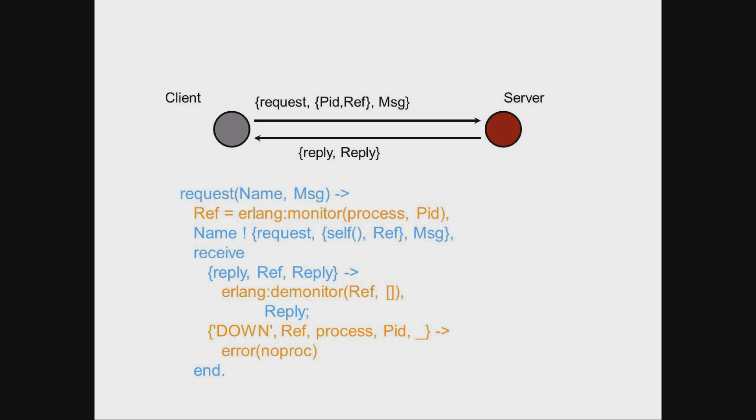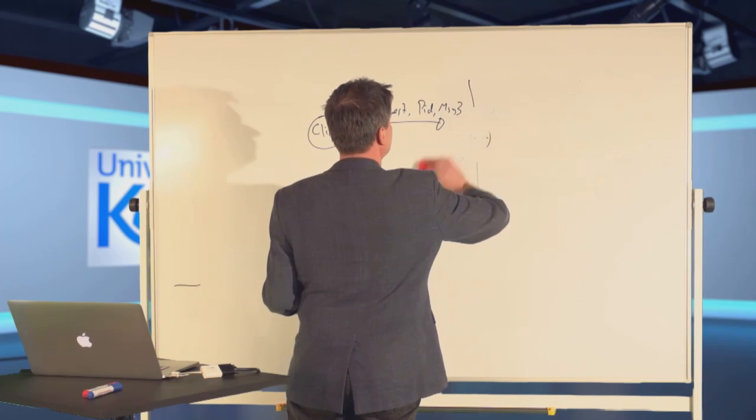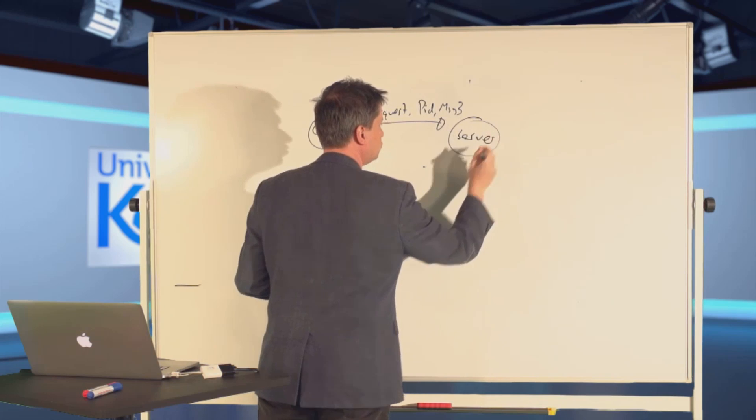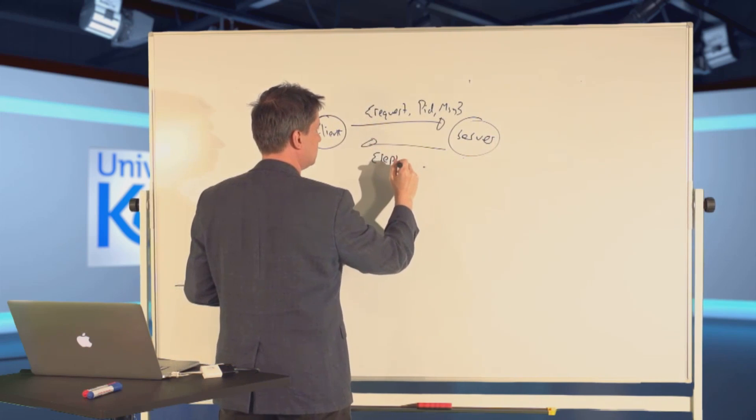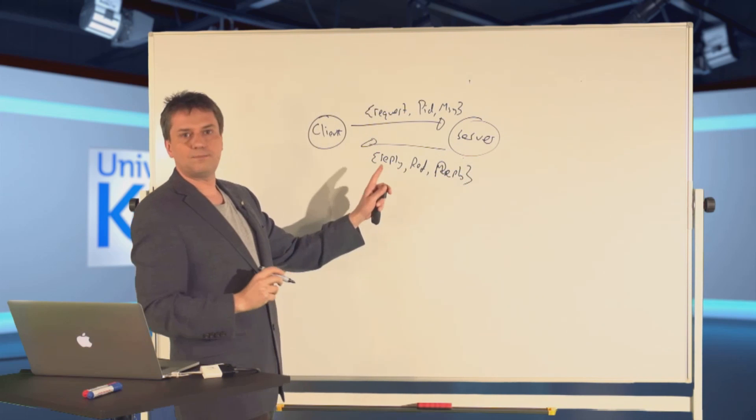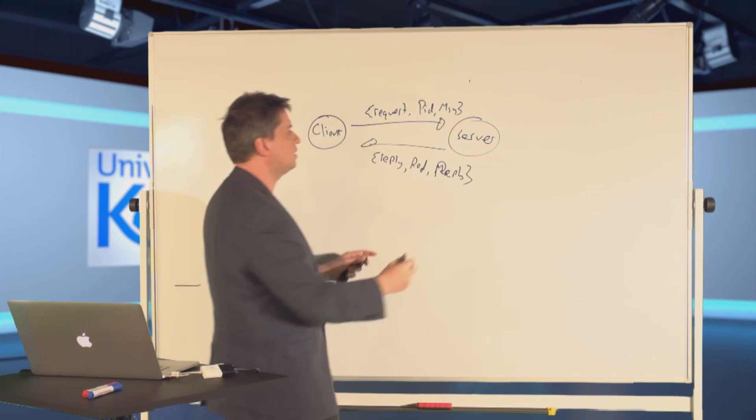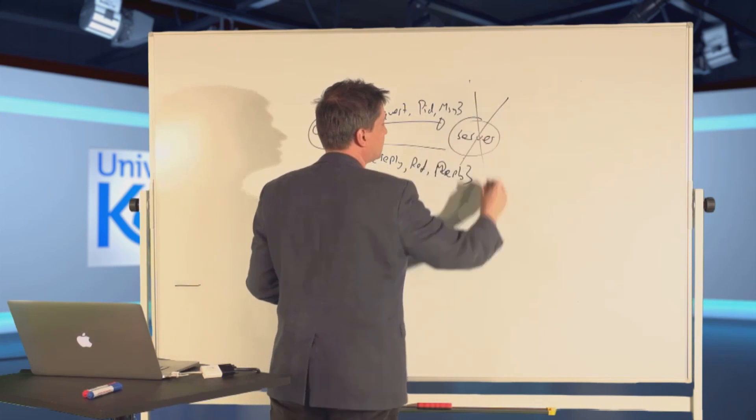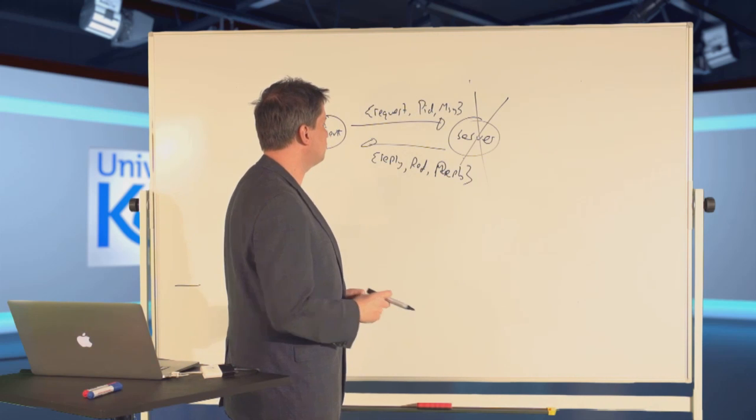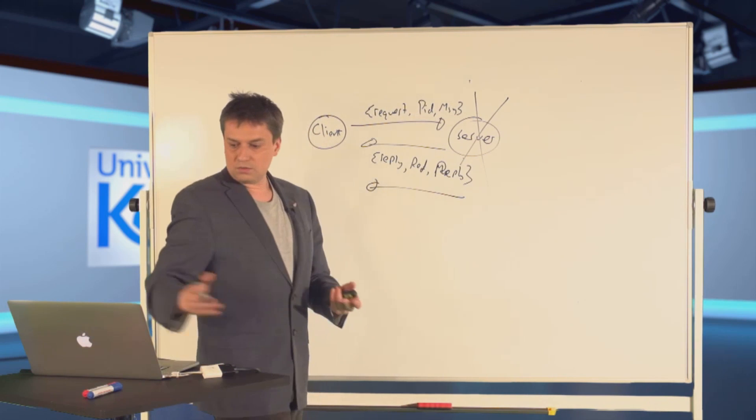It works, but once again there's an issue with this code. There are race conditions which can happen. What happens if, upon having sent the request to the server, the server responds with the reply, but before pattern matching and before receiving this reply and calling demonitor, the server terminates? The termination could be because of another client sending a bad request, or it could be terminated by one of its supervisors.